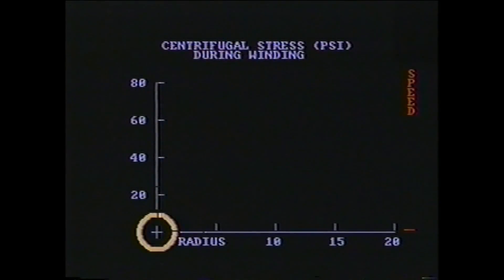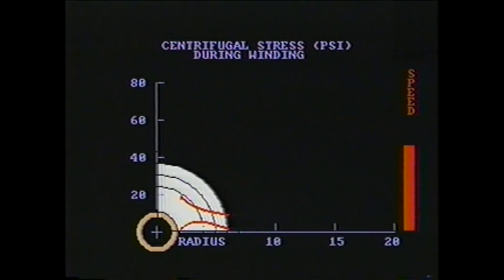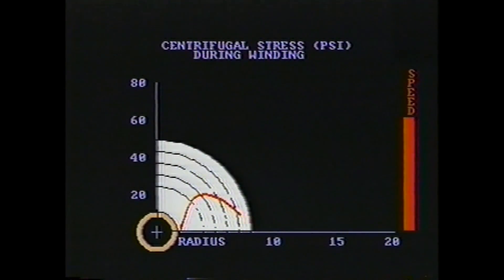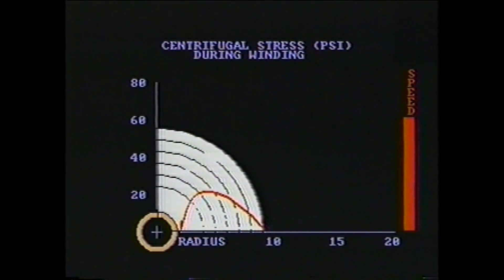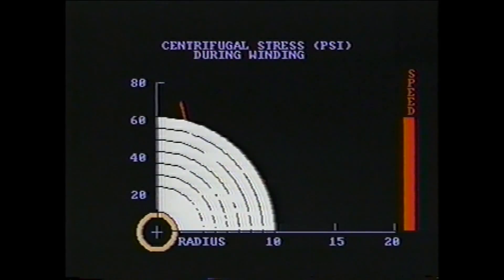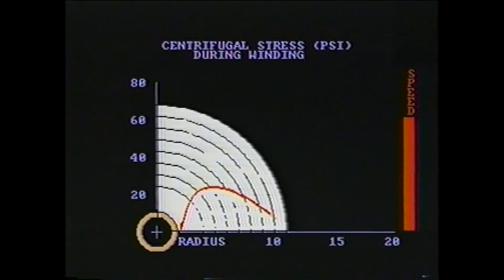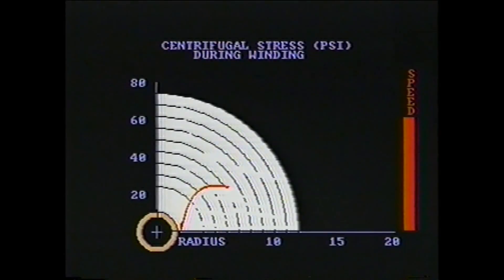Another set of stresses are the centrifugal stresses due to the rotation of the paper roll. High speed rotation causes both radial and tangential stresses to be superimposed upon the roll structured stresses. Plotting both the radial and tangential stresses shown on the vertical axis against position in the roll shown on the horizontal axis, we can see how rotation affects stresses inside a roll during winding. The top curve is the tangential stresses and the bottom curve is the radial stresses.